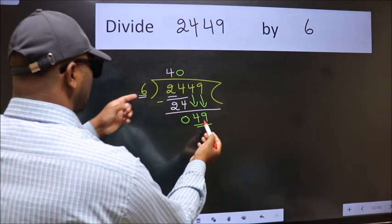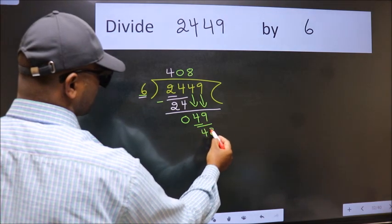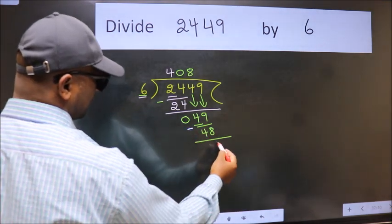A number close to 49 in 6 table is 6 times 8 is 48. Now we subtract. We get 1.